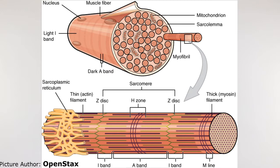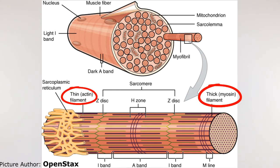When you look at the muscle fiber, inside the muscle fiber, there are two types of filaments. One is thin filament — actin — and thick filament — myosin. These filaments slide over each other. Technically, the thin filament slides over the thick filament. By sliding over each other, they make the muscle fiber shorter.